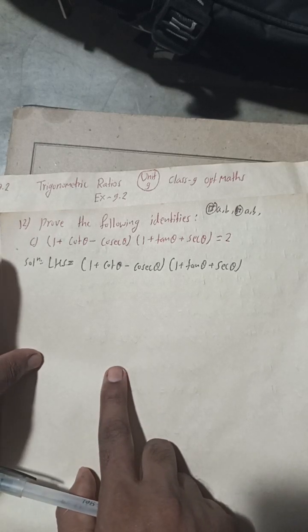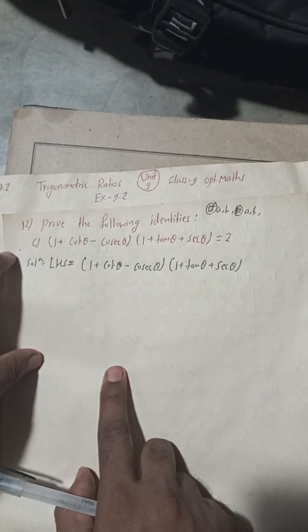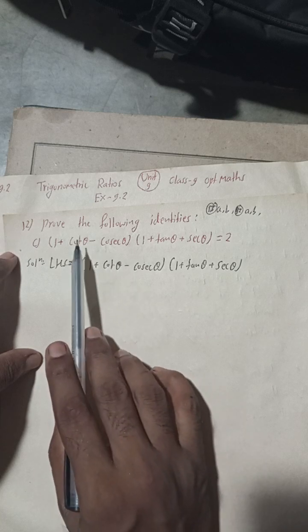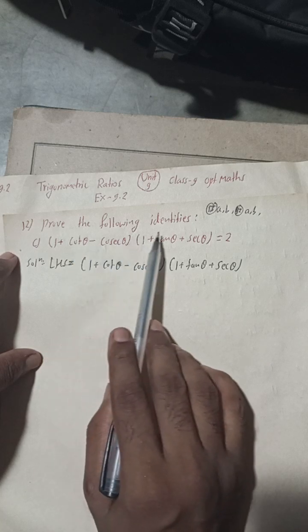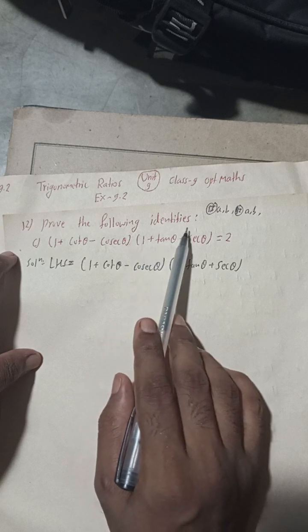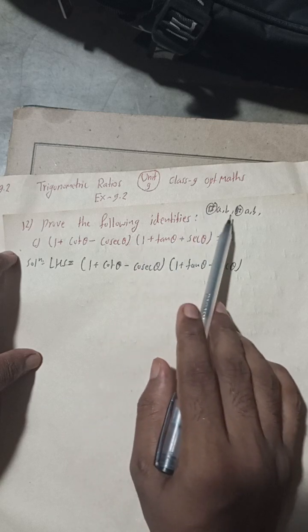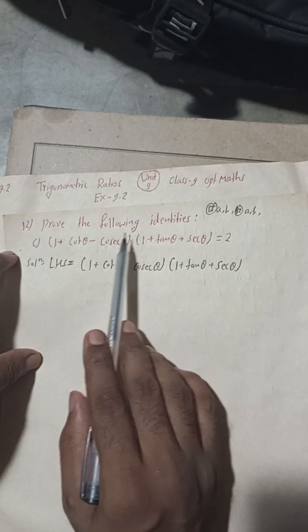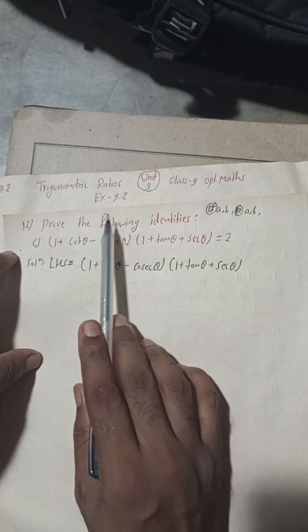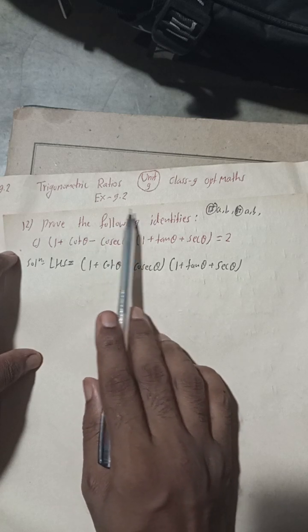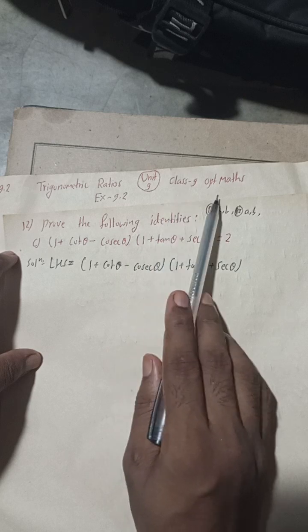Hi everybody, welcome back to Vimal Sarji's YouTube channel. This is question number 12c: prove the following identities. Questions 13ab and 12ab are already uploaded — you can check the playlist. This is exercise 9.2, trigonometric ratios, class 9 optional maths.